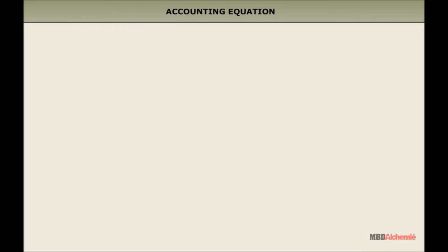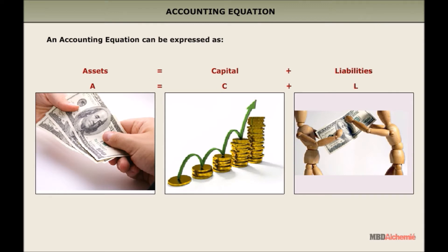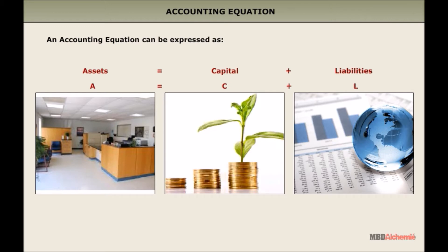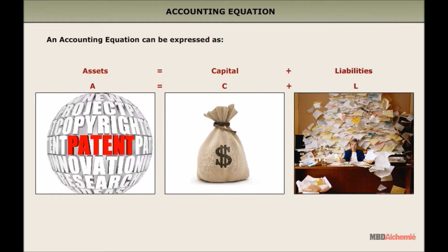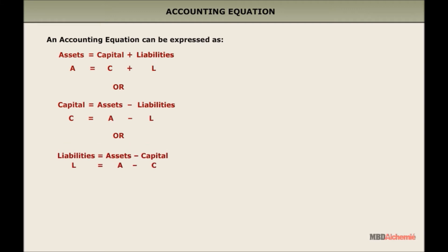An accounting equation can be expressed in the following forms: Assets is equal to Capital plus Liabilities (A = C + L). Or, Capital is equal to Assets minus Liabilities (C = A - L). Or, Liabilities is equal to Assets minus Capital (L = A - C).